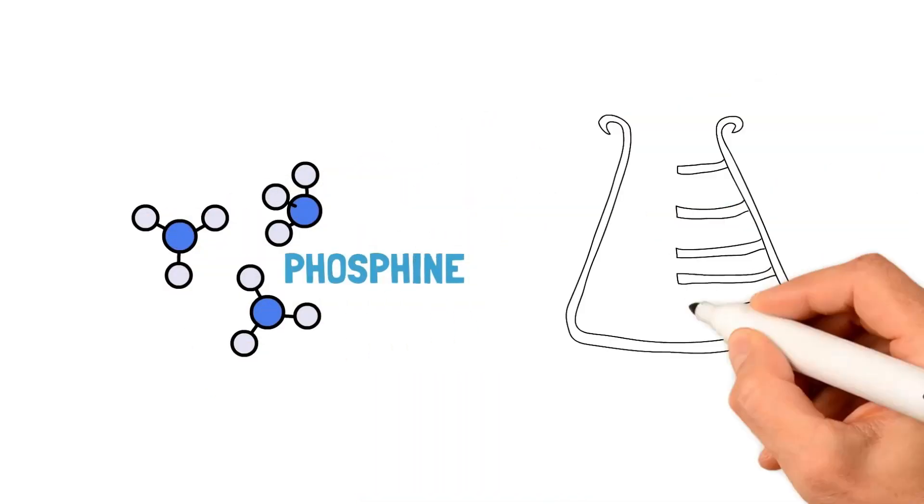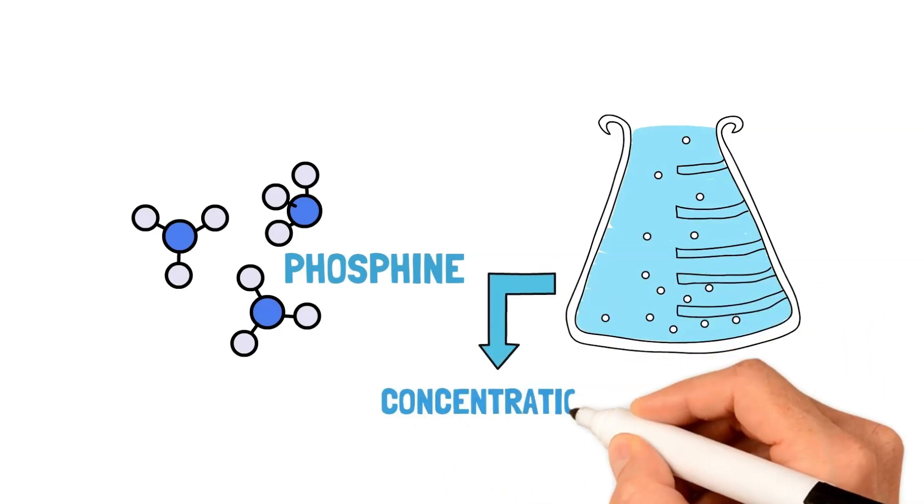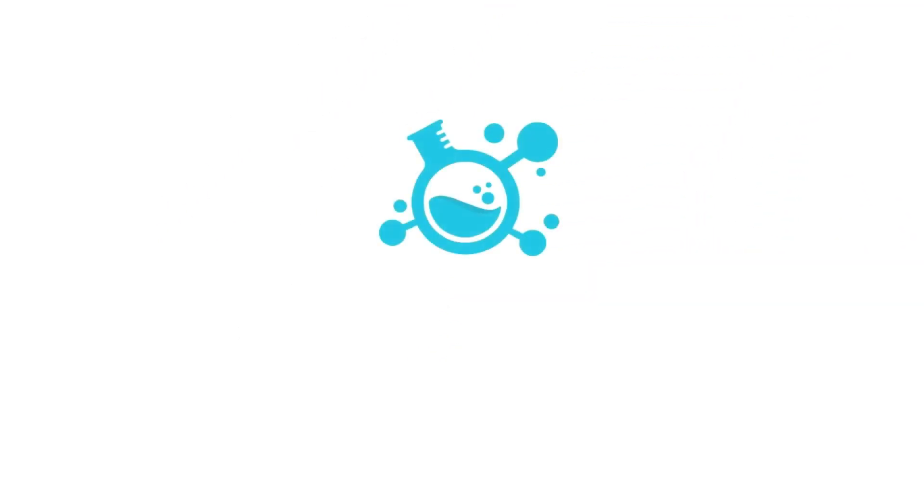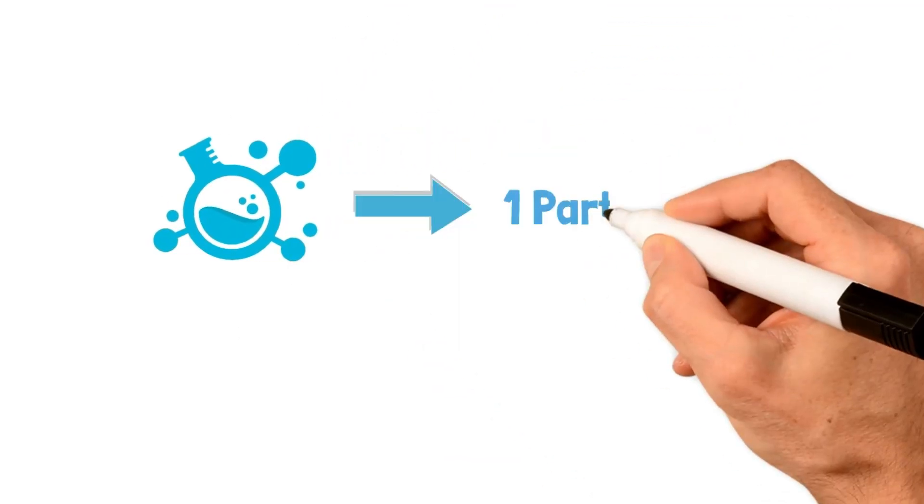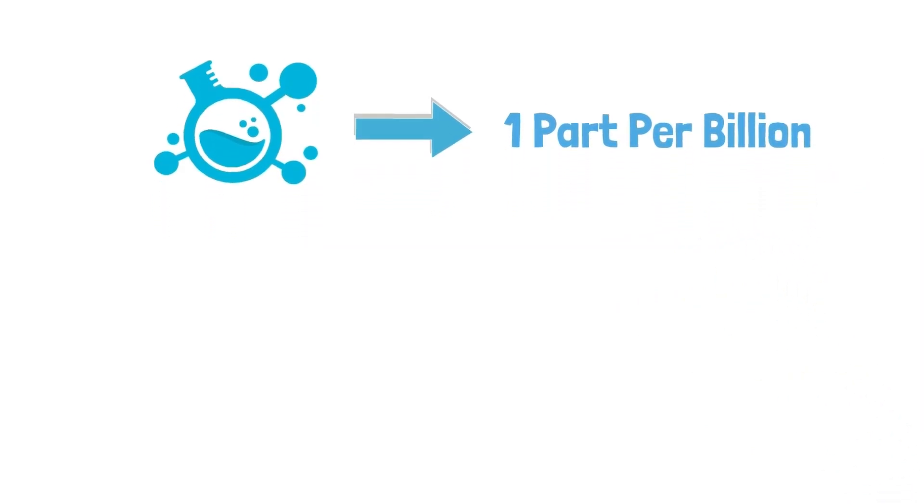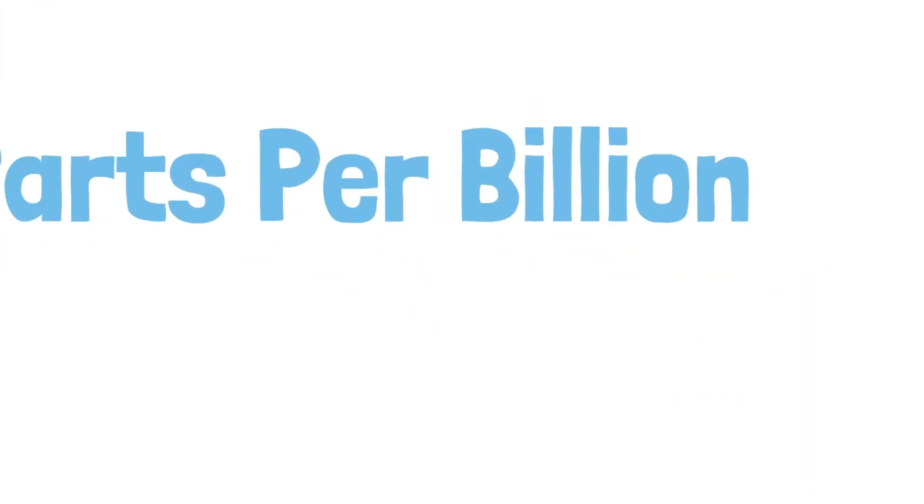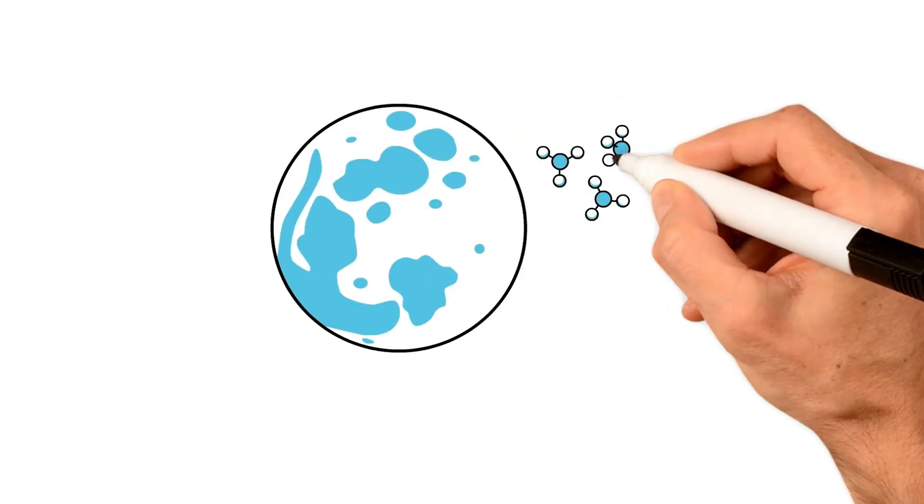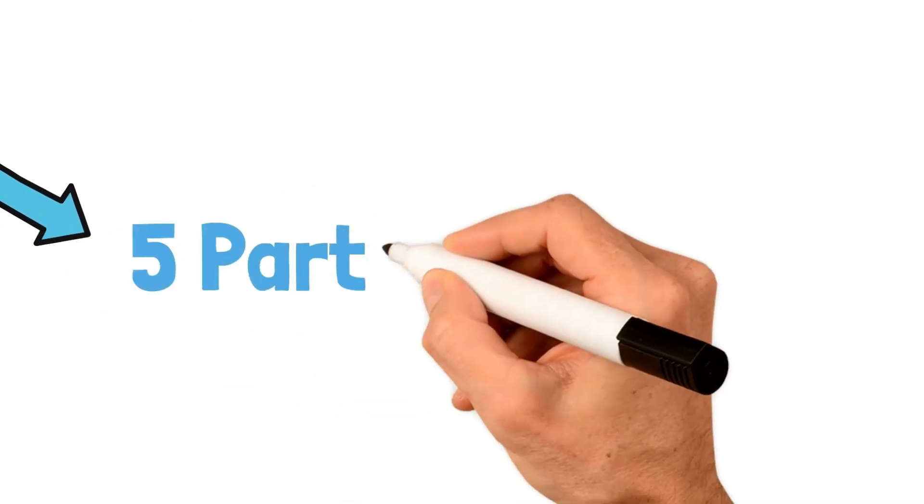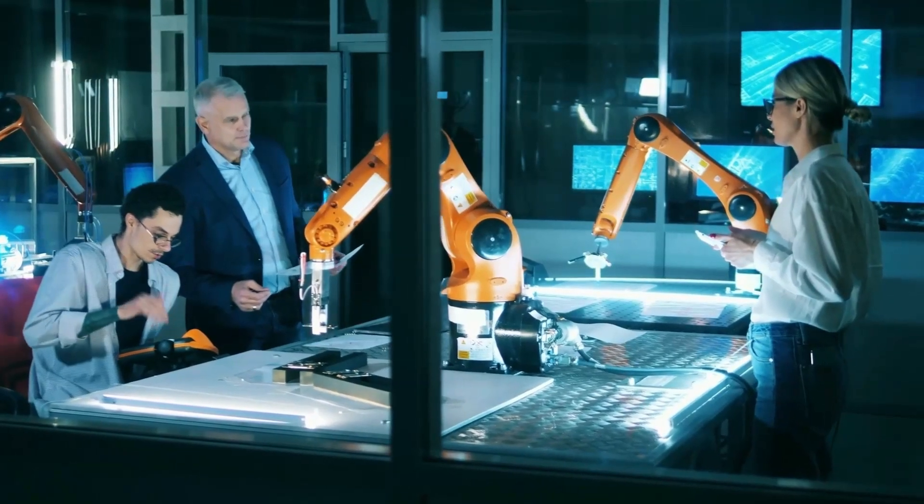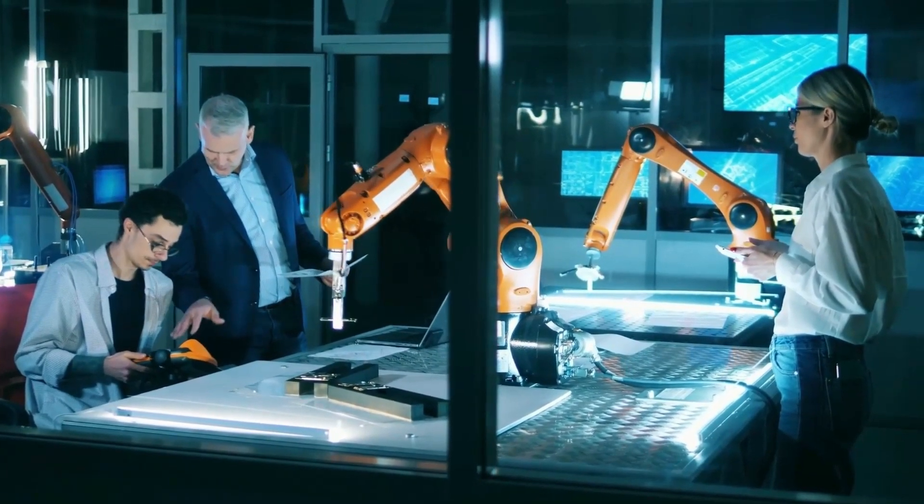Again, a phosphine signal was detected, but this time at much lower concentrations. Phosphine is only found at an average concentration of 1 part per billion, which is quite lower than the first detection level of 20 parts per billion. However, some areas may reach a high of approximately 5 parts per billion. Even so, that's a major change from the initial observation.